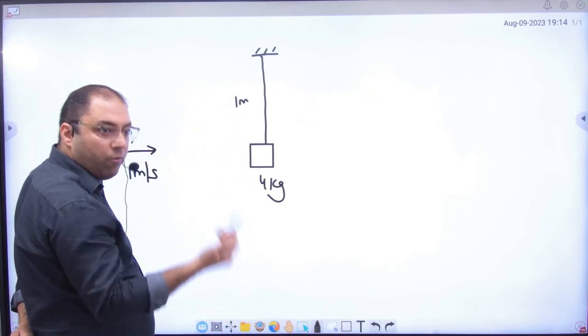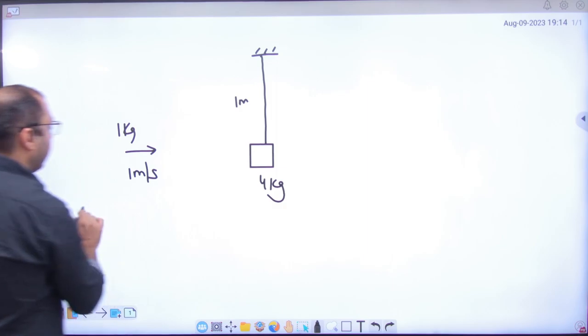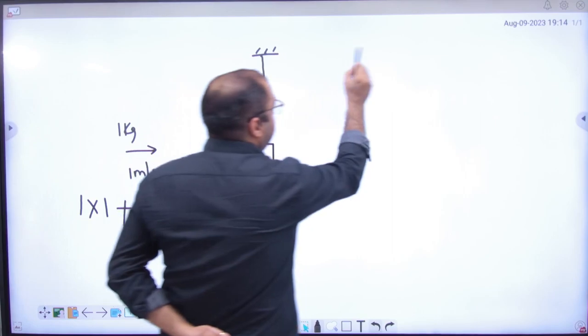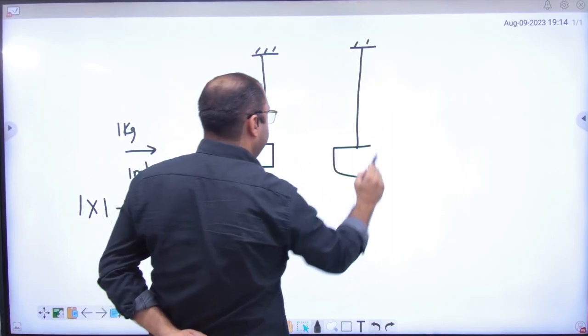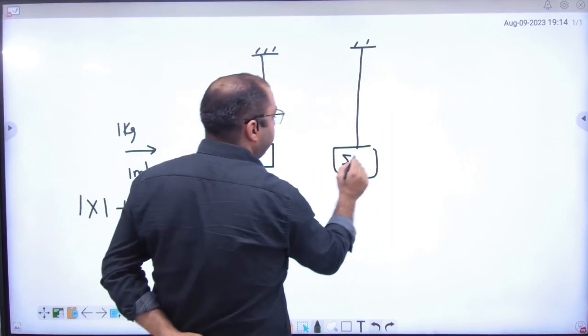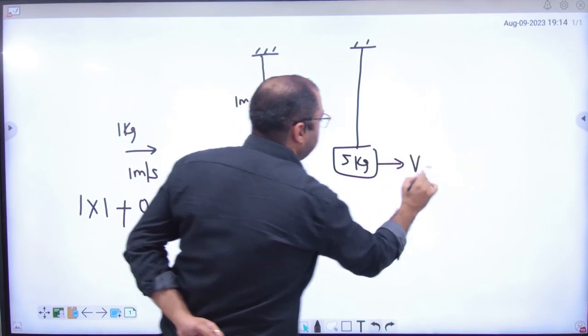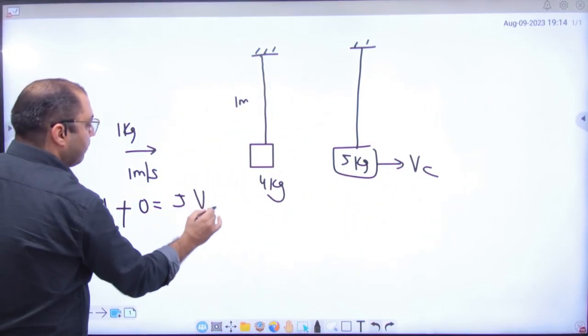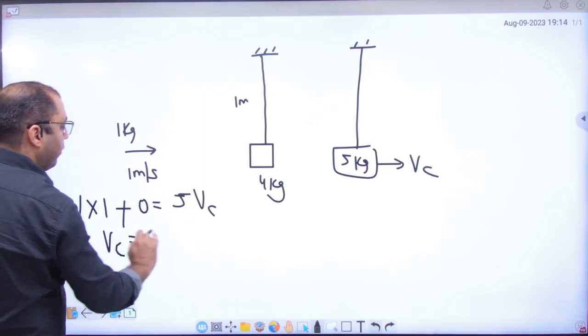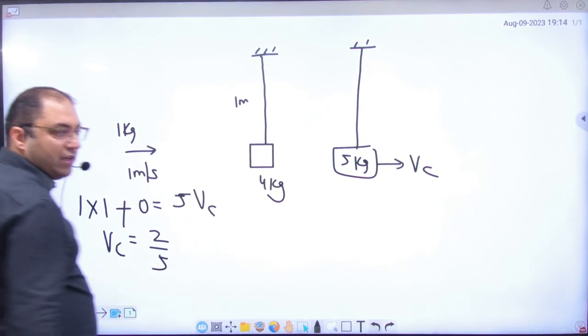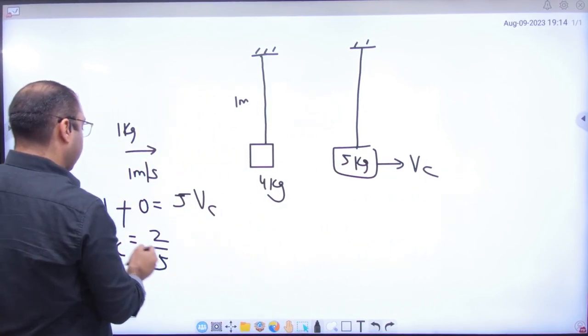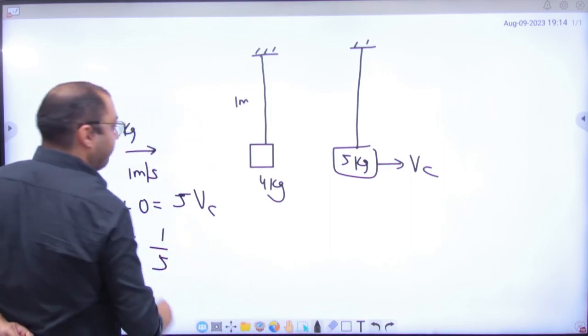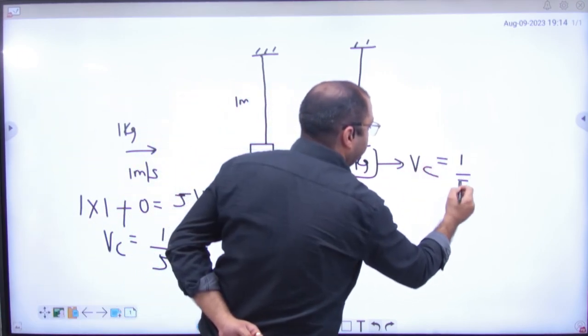The velocity is common. What will we do for common velocity? The bullet is 1 into 1. The block is rest. And when it hits, 5 kg will move with a common velocity. So how will we do common velocity? 5 into VC. So value of VC is 1 by 5. So velocity 1 by 5, length 1 meter.